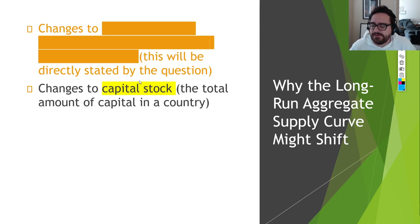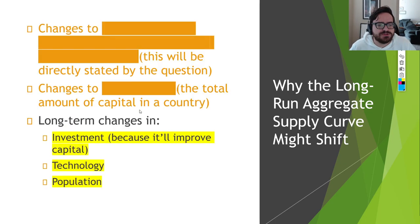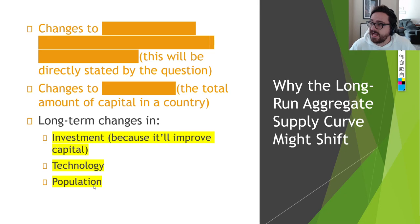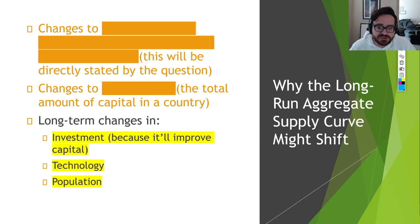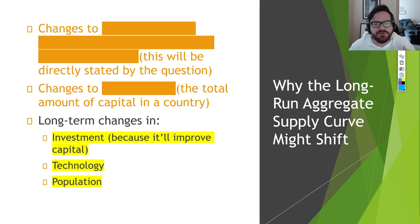What can cause LRAS to shift? Things that affect the classical model. If long-term productivity improves, LRAS goes up. Changes to capital stock — the total amount of capital in a country, meaning technology, tools, and machinery — will affect LRAS. Long-term changes in investment spending improve capital stock; technology improves capital stock; and population changes matter because a larger workforce means a higher ideal level of production.